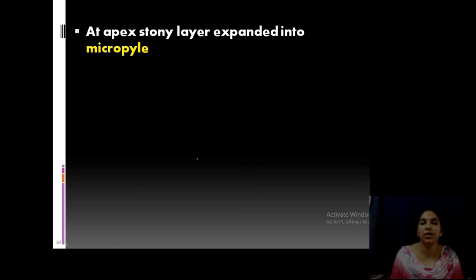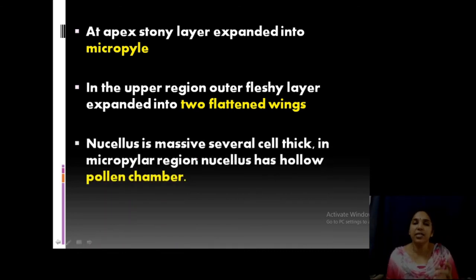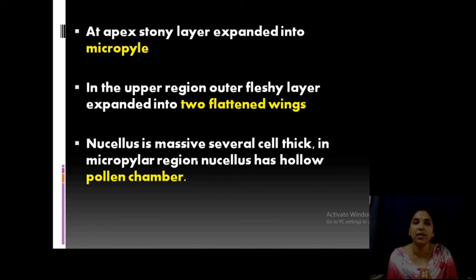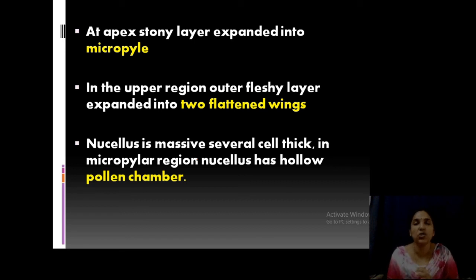One more point about the micropyle or apical region: two flattened wings formed by the expanded outer fleshy layer, and a pollen chamber is present in the nucellar region. This is very important — you have to describe the structure of the Medullosa stem (very important because of the polystelic condition) and also explain the seed Pachytesta or Trigonocarpus. Draw diagrams and explain. That is all about the Medullosa stem; members are mainly Medullosa and Pachytesta or Trigonocarpus seeds.